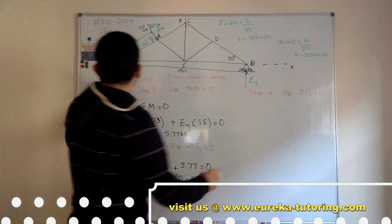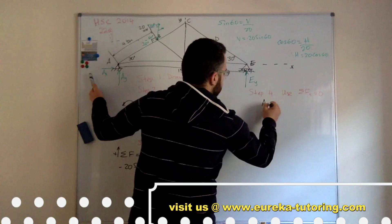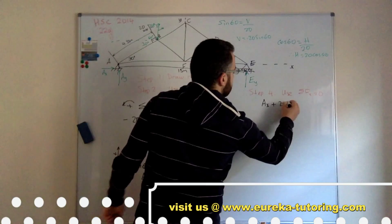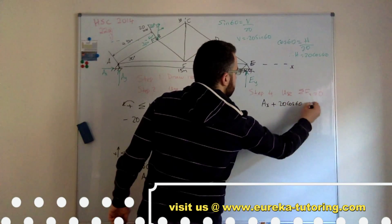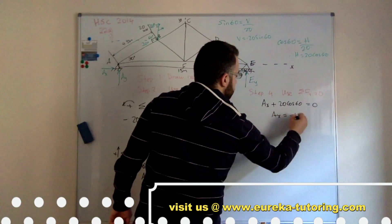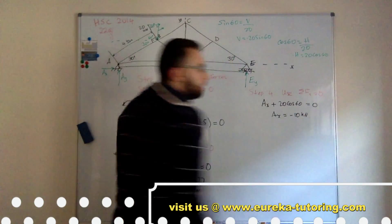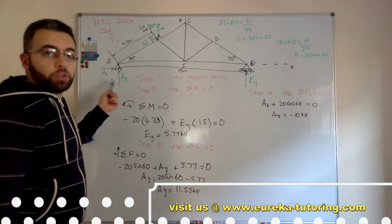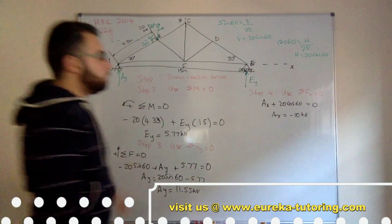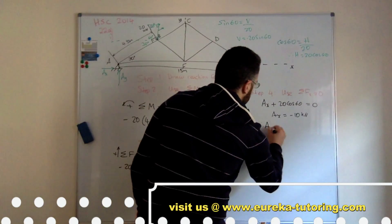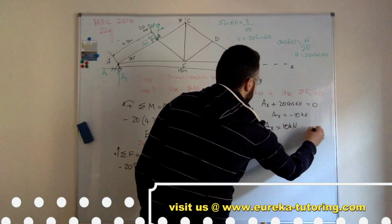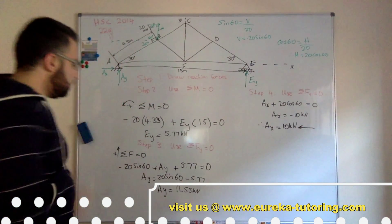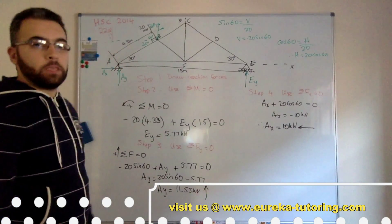So plug it into the equation and we get AX, which is the horizontal force, plus the horizontal force here, which is 20 cos 60, equals zero. AX equals negative 10 kilonewtons. Now because it's negative, that means we assumed it to be going in the wrong direction. So because it's negative, we flip it. So therefore, AX equals 10 kilonewtons going that way. And because this is positive, that means we've assumed correctly, and so that's just going upwards.